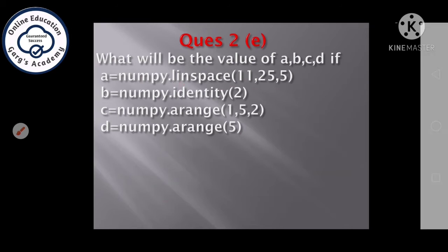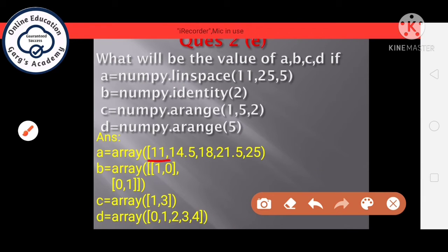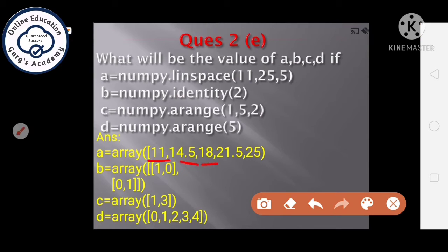So, it will create the array, first element will be 11, after adding 3.5, it will give 14.5, next element will be 18, next element 21.5 and next element will be 25. Next, identity function, it is the same as i function and it will give an array with given dimension as unit matrix. Third function is arange function with arguments 1, 5, 2 means starting from first, it have to go up to 5 in steps of 2. Because last index is not included, it will give only result 1, 3. Next element, arange 5, it will create the array starting from 0 to n minus 1 in steps of 1. So, it will be the answer.